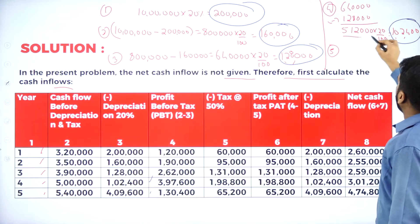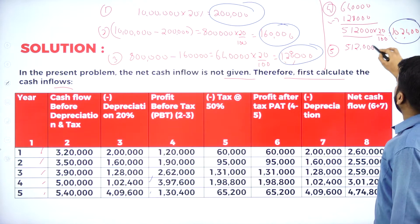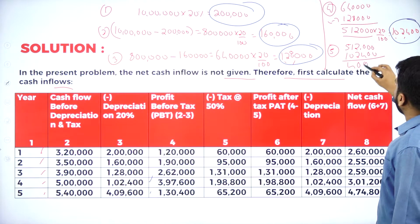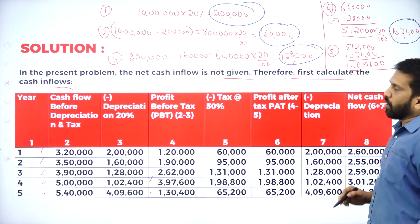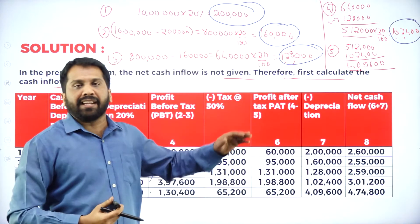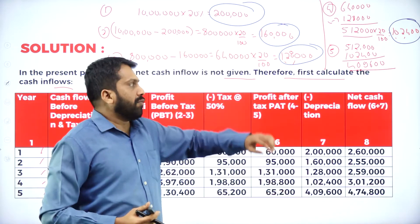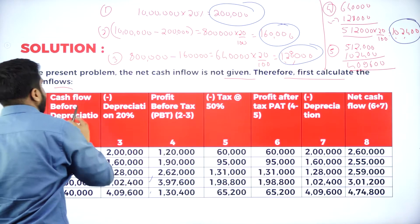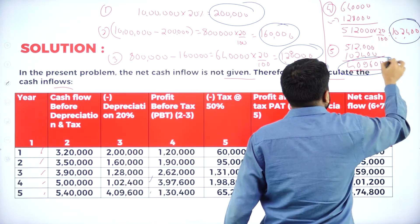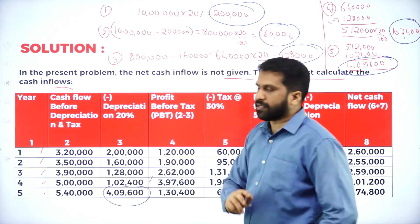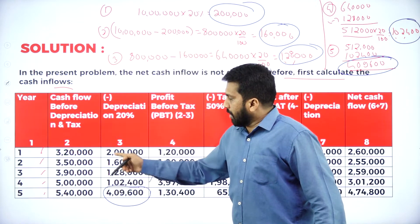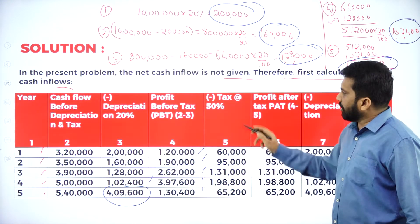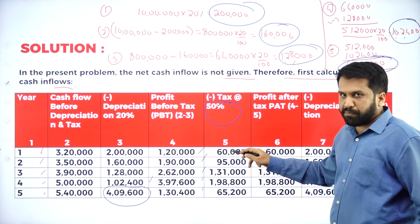Year 5: 5 lakh 12,000 minus 1 lakh 2,400 = 4 lakh 9,600. We will not calculate depreciation for the fifth year because at the end of year 5 the machinery's life is over. Whatever is left out for the fifth year — that 4 lakh 9,600 — is only your depreciation. Hope that is clear.